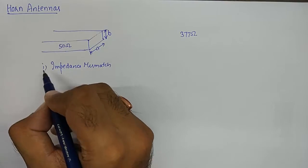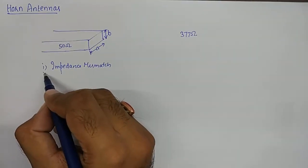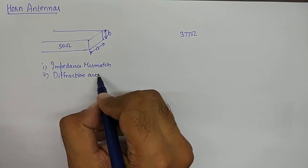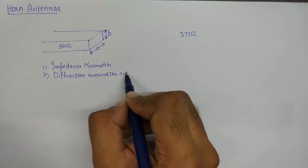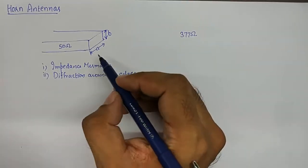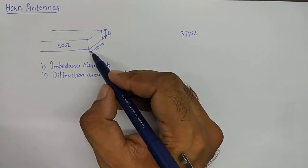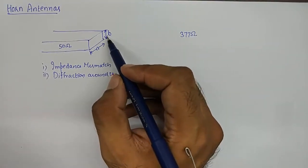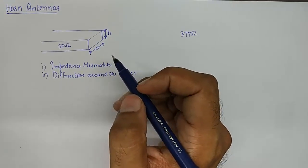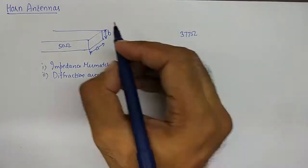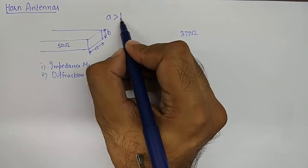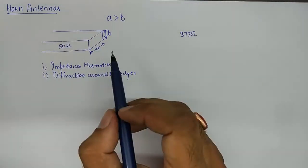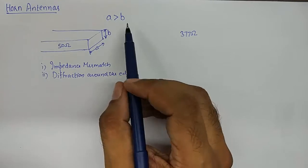The second reason a waveguide cannot be used as an antenna is diffraction around the edges. A rectangular waveguide has a width of A and a height of B, and the width is always greater than the height in the construction of a rectangular waveguide. So A will always be greater than B, where A is width and B is height. We will use this nomenclature throughout this tutorial.